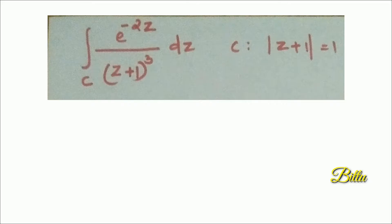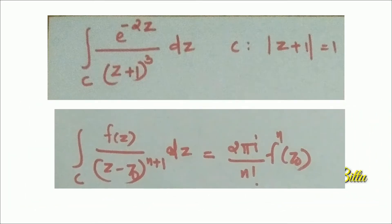Check whether the singular point lies inside or outside the given circle. Since the circle has center −1, the singular point −1 lies inside C. This question is suitable for applying Cauchy's Integral Formula for derivatives. We have to choose suitable Z₀, N, and f(z). Z₀ is the singular point which lies within C, so we choose Z₀ as −1.